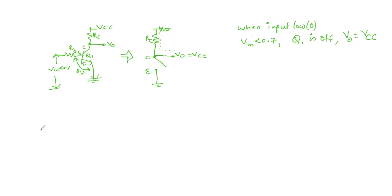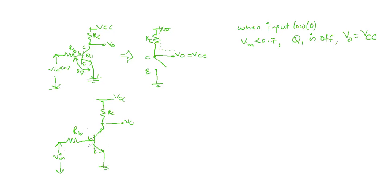Similarly, if you apply an input more than 0.7V, here I am taking a transistor with a collector resistor RC connected to VCC, output collected across the collector terminal, base terminal shown, and emitter grounded. There is a base resistor RB. Here I am applying V_input. The cutoff voltage of the base-emitter of Q1 is 0.7V. When V_input is greater than 0.7V, transistor Q1 will start conducting, and the collector and emitter terminals will be short-circuited.